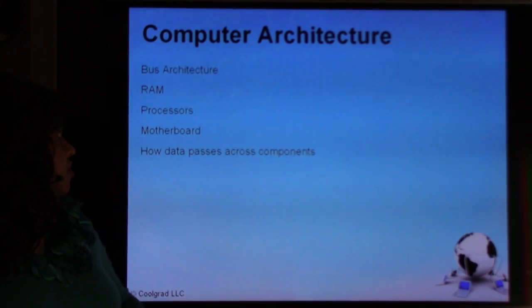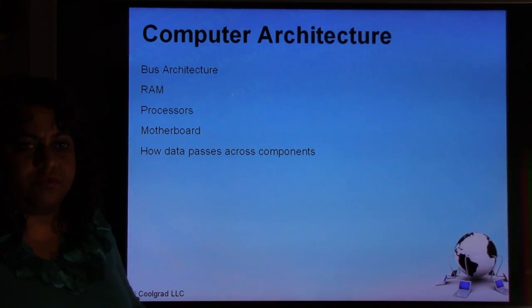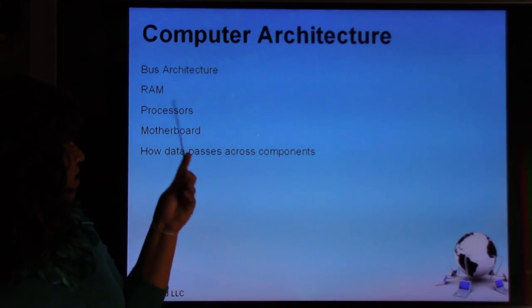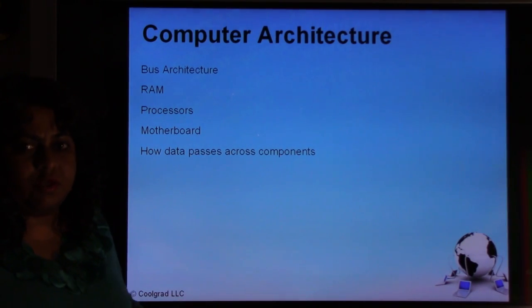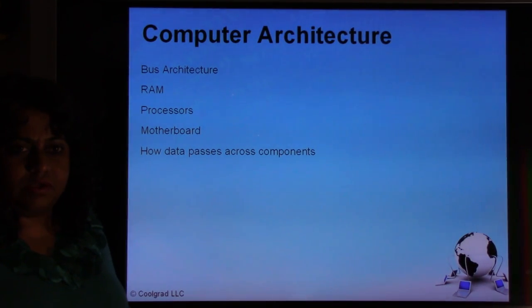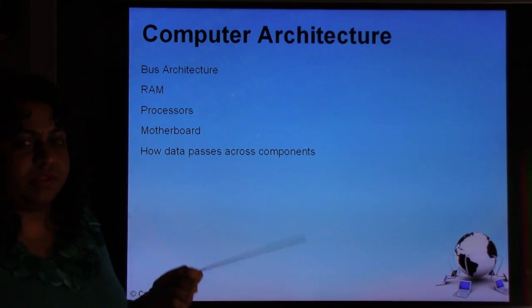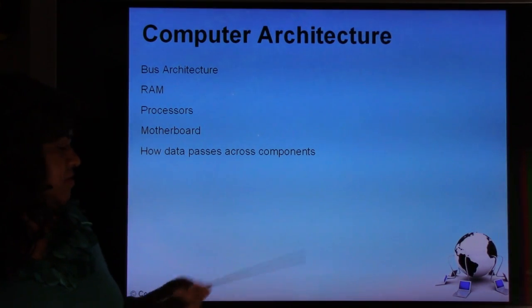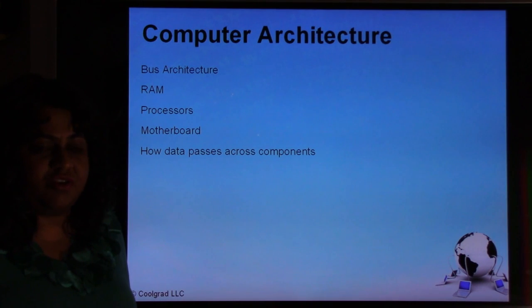Computer Architecture covers bus architecture and how data is transmitted between different parts of the computer. You learn about RAM (random access memory) and different types of RAM, data storage, logic design, how to use multiple processors to execute operations, and how the motherboard architecture works and how data passes across components. It's all at a fundamental system-level specification and can be interesting if that's your area of interest.